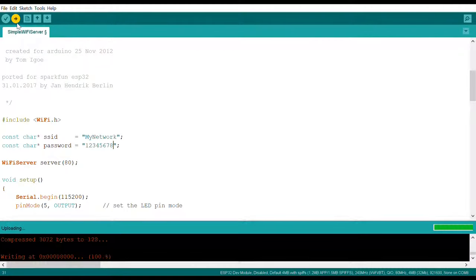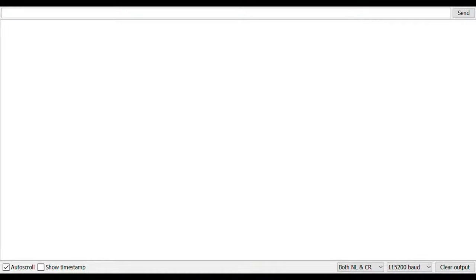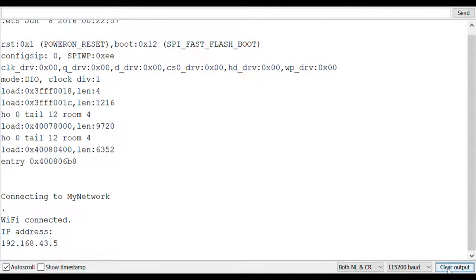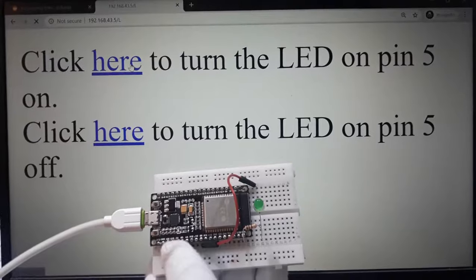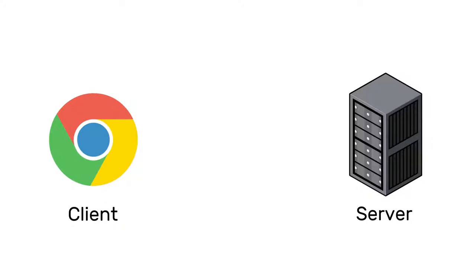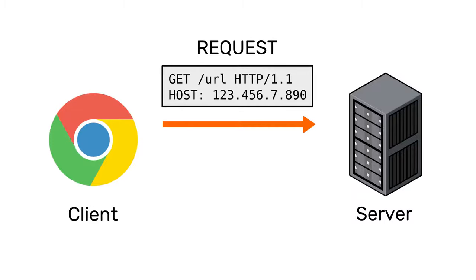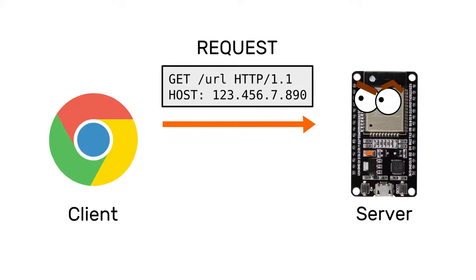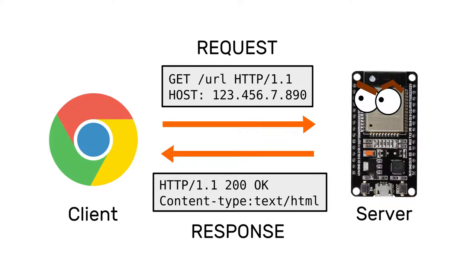Now upload the sketch. Once the upload is done, open the serial monitor and reset the board. As soon as the ESP32 connects to your Wi-Fi, it will print out its IP address on the serial monitor. Copy this IP address and paste it into your web browser and you'll be greeted with a simple web page. Try clicking the buttons — and the LED is turning on and off! Here's what's happening: your web browser acts as an HTTP client, and every time you instruct your browser to visit a website with a URL, your browser will send out an HTTP GET request to the server that has that specific address. The server — which in our case is the ESP32 — will acknowledge the request and send a response. In our case, the response contains HTML code for displaying this simple web page.